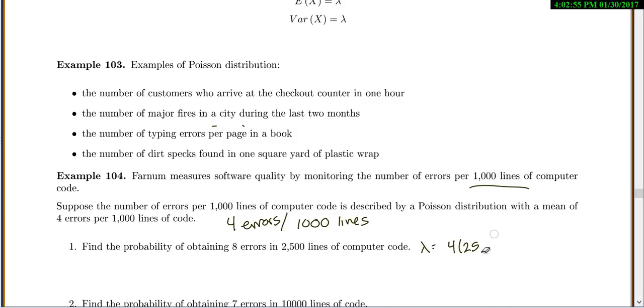Sorry, not 4 times 2,500. So 4 for 1,000 - 2,500 is 2.5 times 1,000. So 4 times 2.5 is 10.